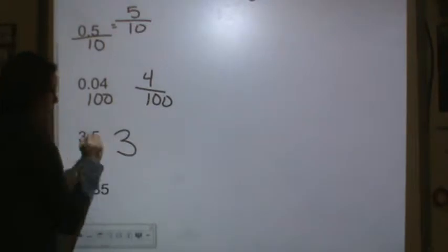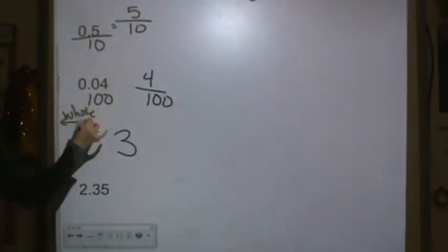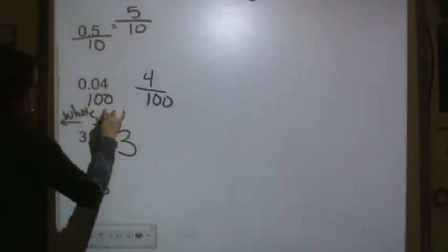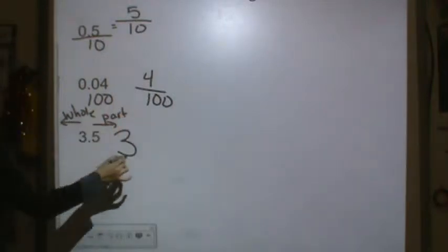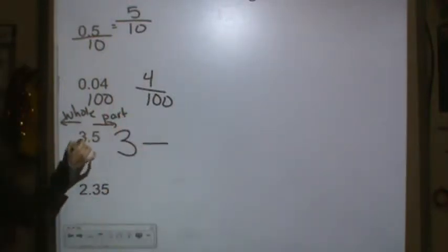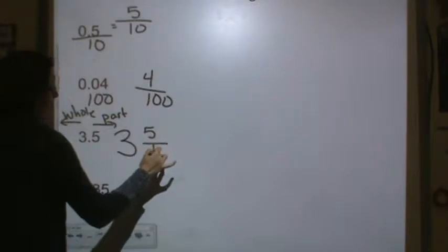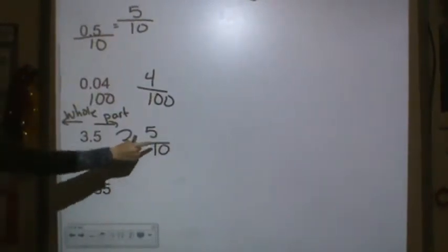Next one. We have 3 and 5 tenths. So we have 3 wholes, because it's to the left of the decimal place. That's the whole, right? And then to the right is the part, or the fraction. 3 and 5 tenths. So 3 wholes and 5 tenths.